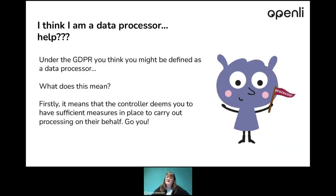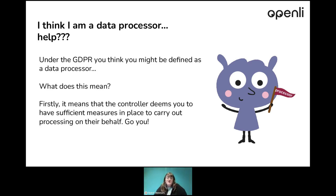You think that you might be a data processor. Normally a data controller would be a natural person. So if someone contacts you or signs up to your service, they would be the controller and you are likely to be the processor. For example, our customers can be the data controllers and then when they sign up with us, we become the processor. Under the GDPR, being defined as a data processor means that the controller deems you to have sufficient measures in place to carry out the processing on their behalf — which is great. That means they think you offer the protection they want for their personal data.